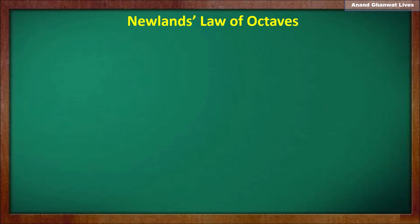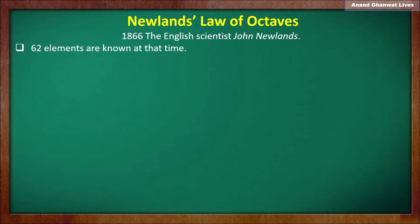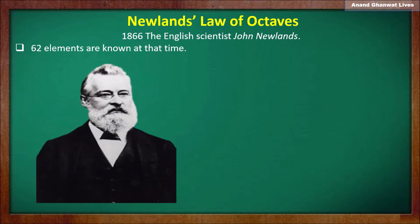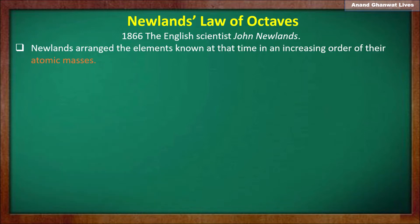In the last period we learned about Dobereiner's Triads. In this lecture we are going to learn Newland's Law of Octaves. In 1866, the English scientist John Newland put forward Newland's Law of Octaves. At that time, totally 62 elements were known. For these 62 known elements, Newland arranged the elements in the increasing order of their atomic masses.